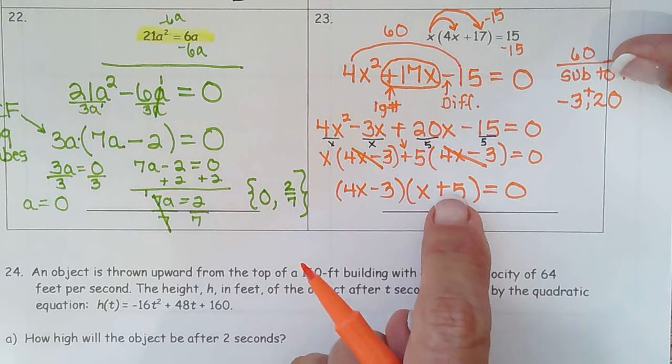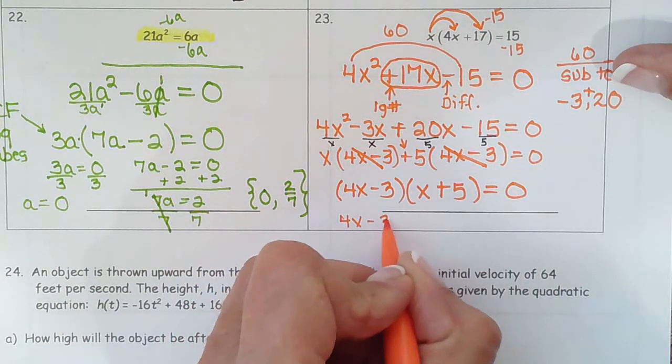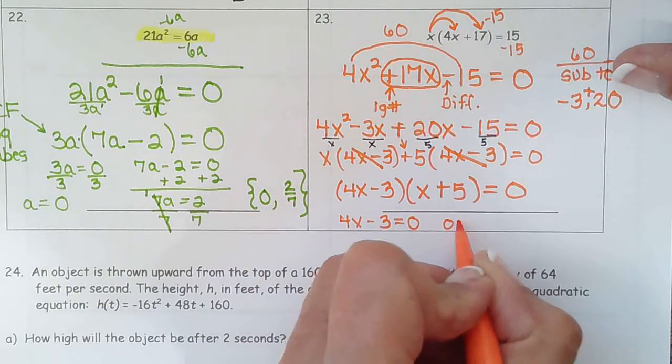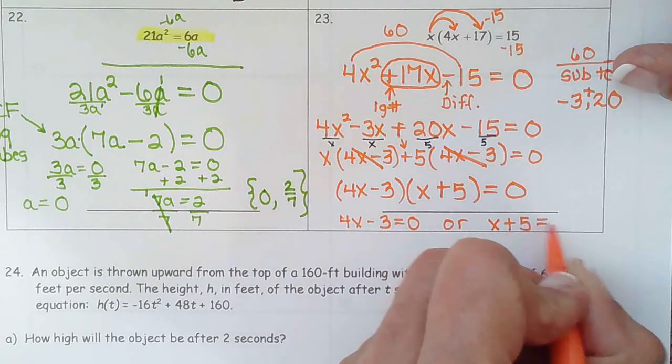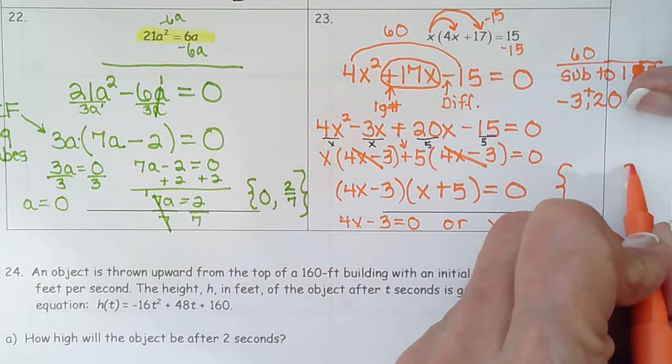So if a times b equals 0, then either a is 0 or b is 0. And so I solved these two to get my two solutions, which we'll put over here.